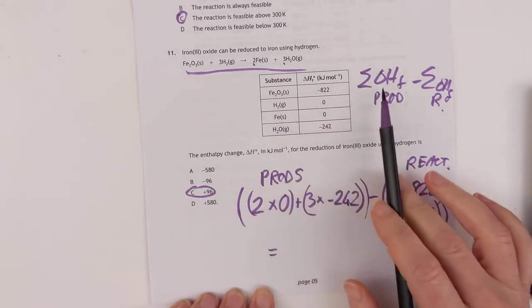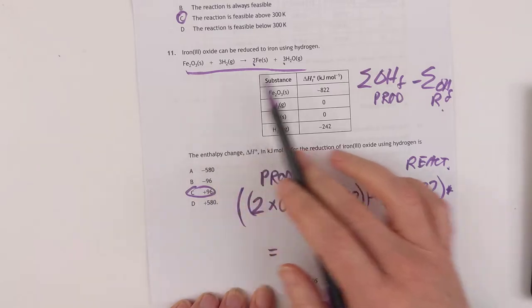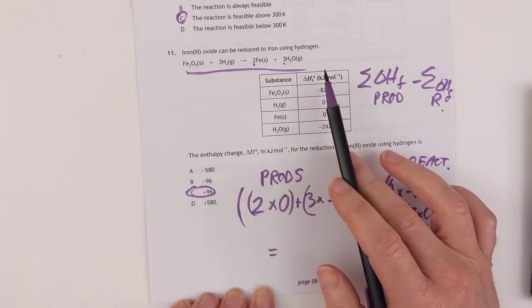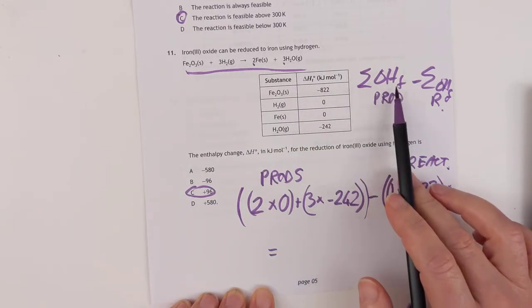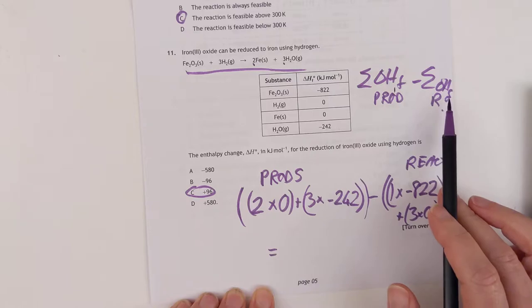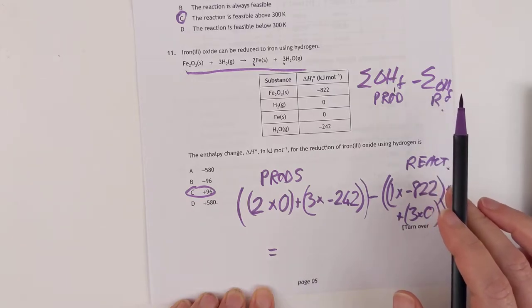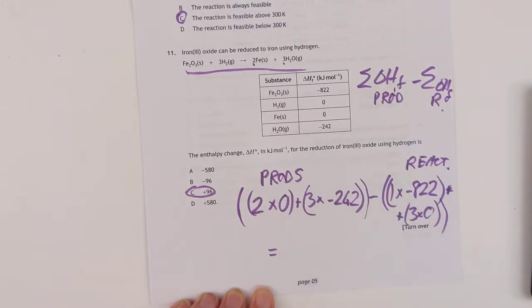So this is the enthalpy change for the overall reaction — it's just the sum of all the products' enthalpy of formations, take away the sum of all the reactants' enthalpy of formation. That was in our data book formula page.